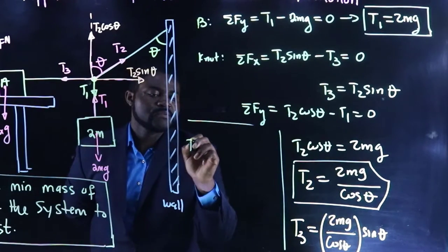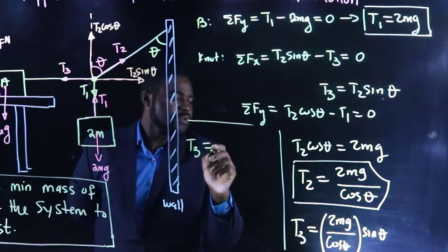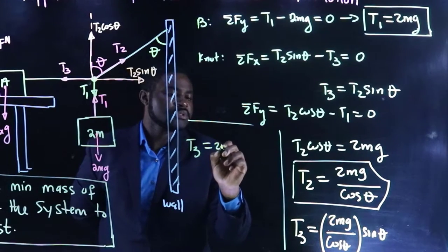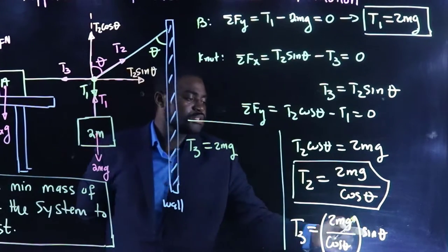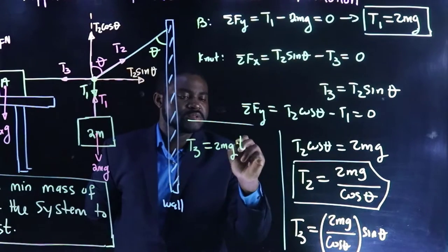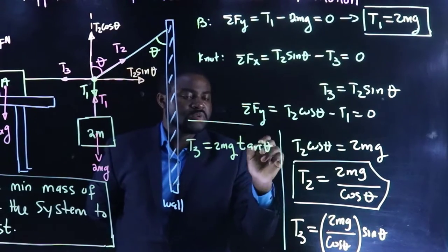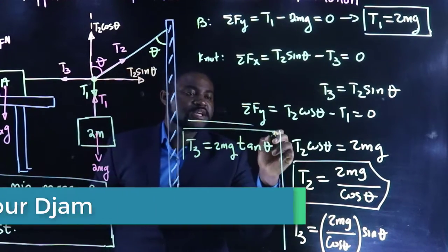So T3 will be equal to 2MG, sine divided by cosine theta, will give you tangent of theta.